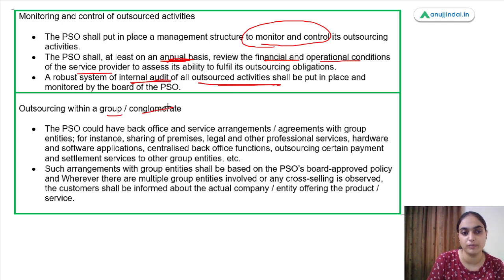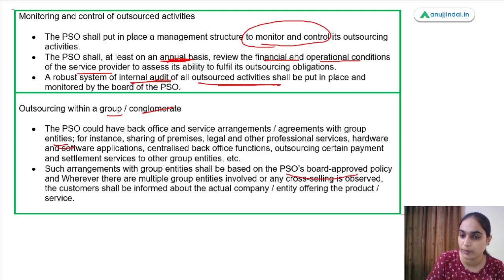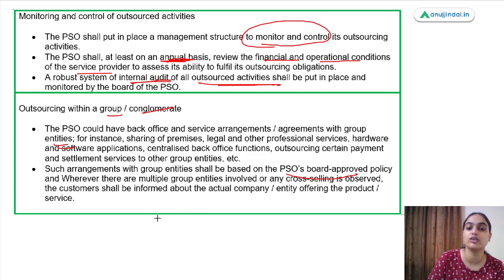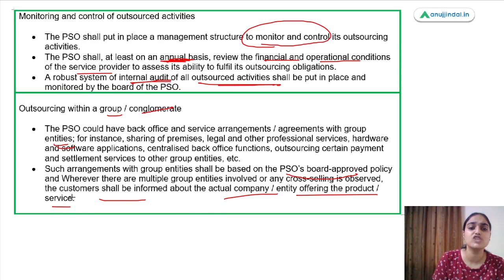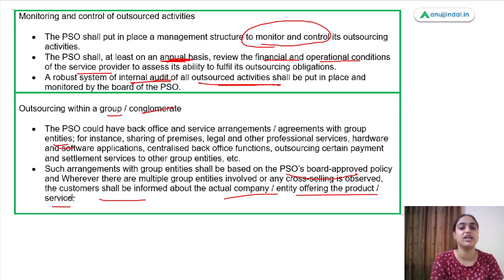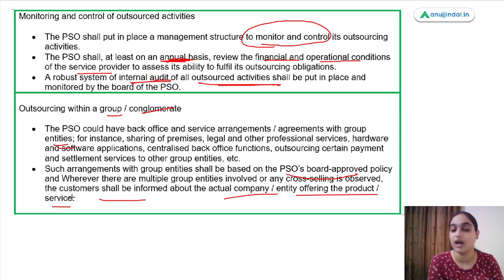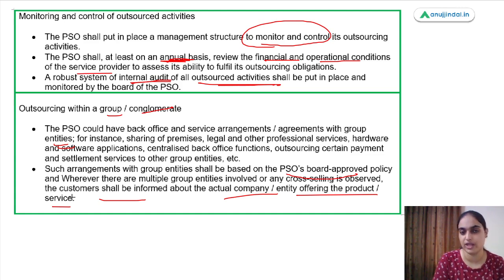Regarding outsourcing within a group or conglomerate — a PSO could have a back office or service arrangement with group entities. In that case, those agreements with group entities shall be based on the PSO's board-approved policy. Where multiple group entities are cross-selling or offering services to customers, customers should be informed about the actual company entity offering the product or service. This was all about the RBI outsourcing framework.